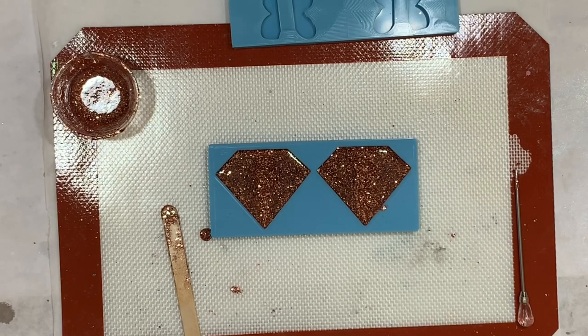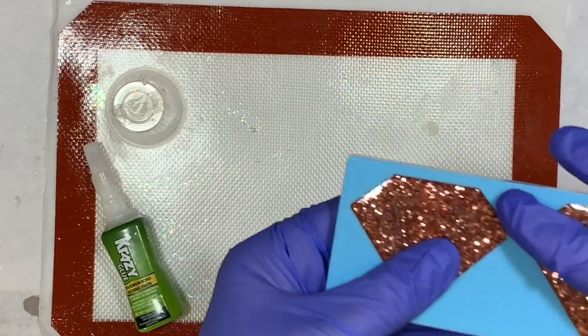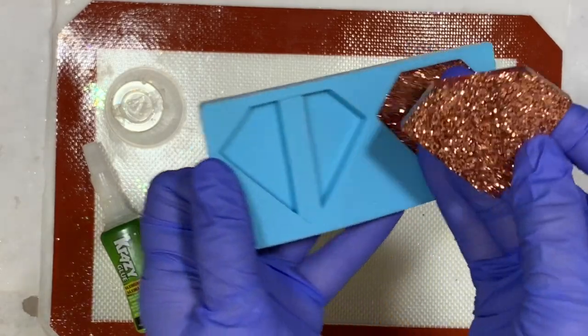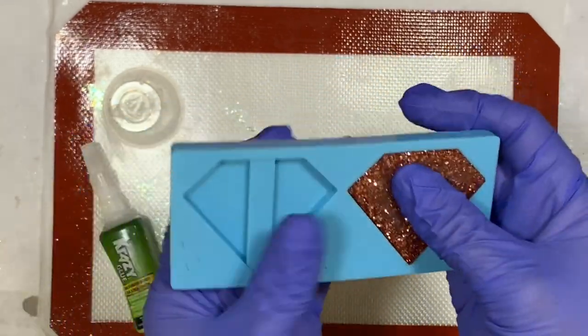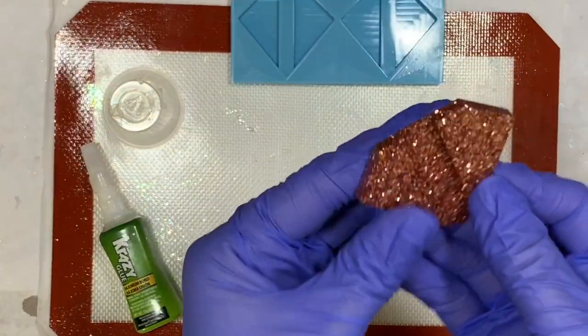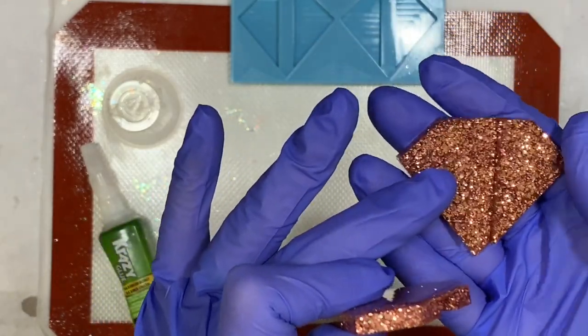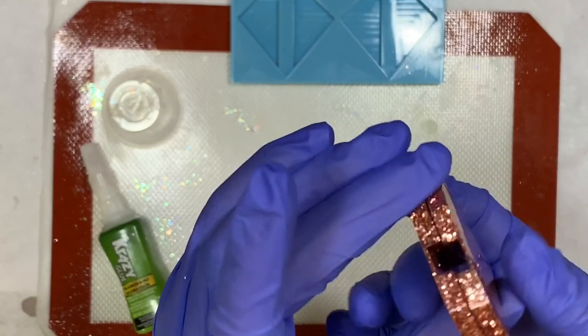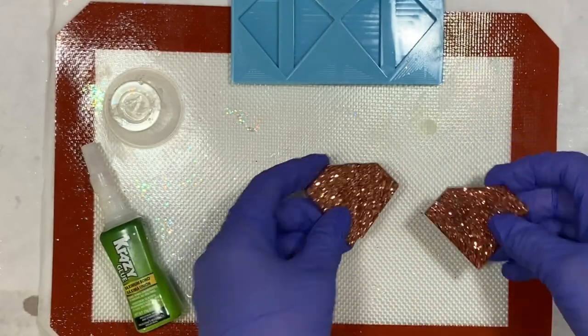Okay guys, I'm back. I let these cure, we're going to go ahead and pop them out of the mold so we can get them together. That's one side, that's the other side. Now as you can see, this is the bottom piece - the inside - because it has that indent in there where the straws are going to go, and then these two pieces go together to form the straw topper.